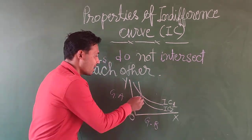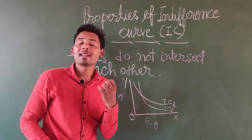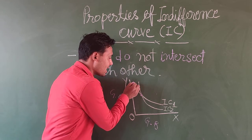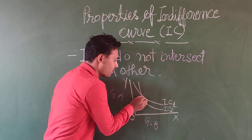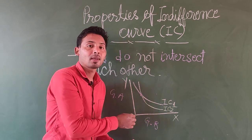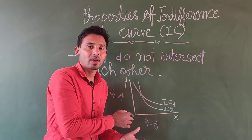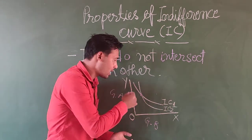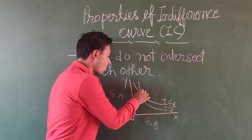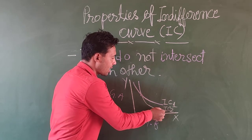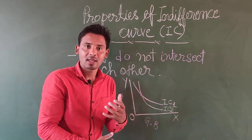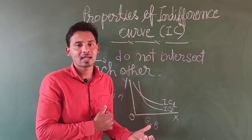But later on when they cross each other, when they intersect each other, what happens is IC1 is the level of satisfaction that means IC2 is showing the lower level of satisfaction.